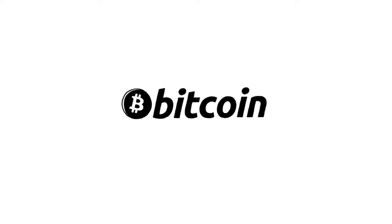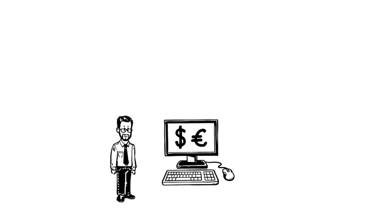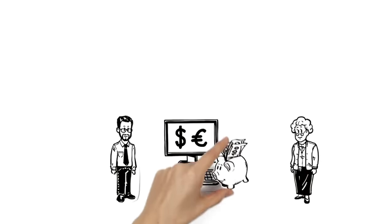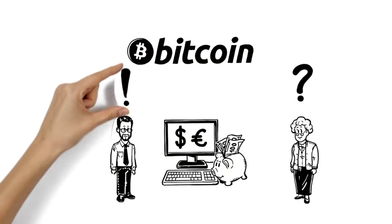Bitcoin, explained simply. This is Matthew. He works with online payment, and his grandmother Margaret has just begun banking online. She's heard of Bitcoin but doesn't know what it is. Matthew can explain.